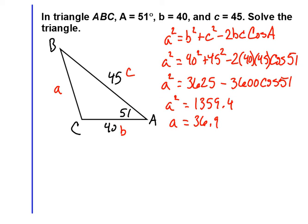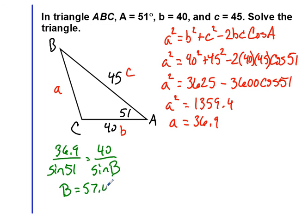Now that I have an a side and an a angle, let's set up a law of sines. Law of sines is going to be 36.9 over the sine of 51. And we can work on either angle c or angle b first. So let's work on angle b, 40 over the sine of angle b. Solve that law of sines. And your angle b will be equal to approximately 57.4 degrees. And then using our 180 degrees for a triangle, we're going to get our angle c, 71.6 degrees. There you go.